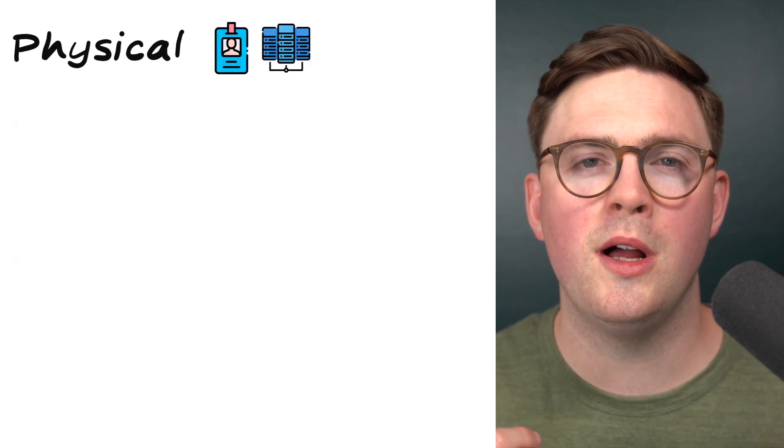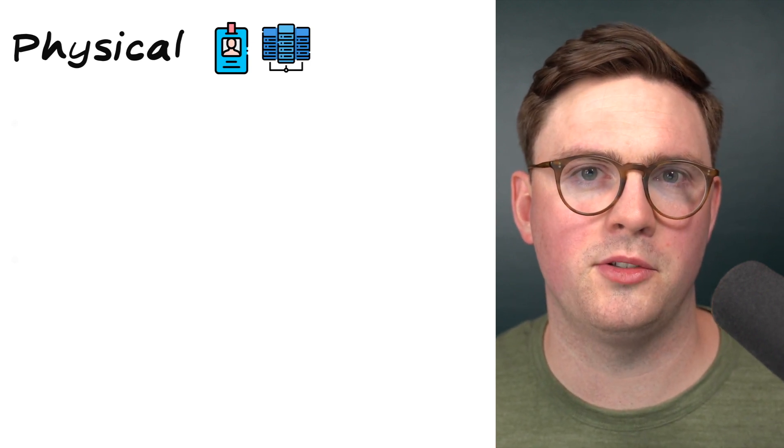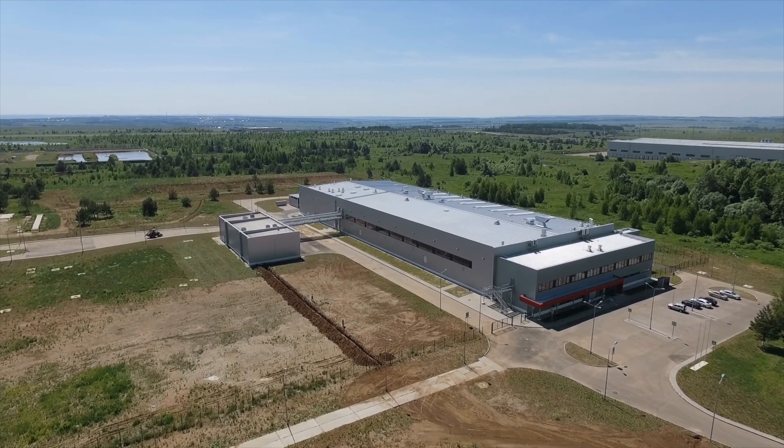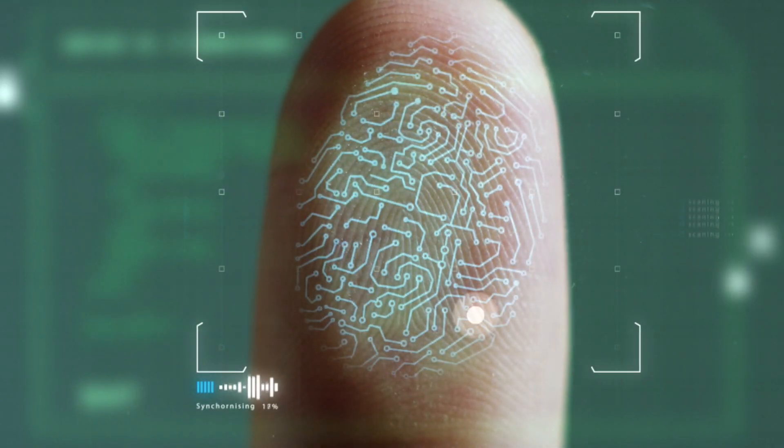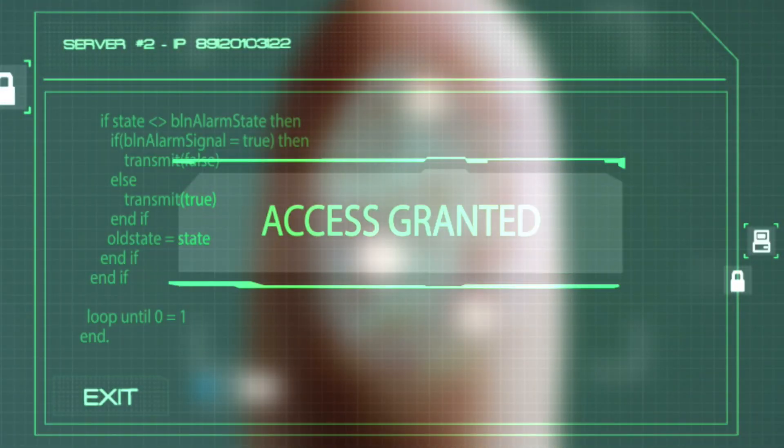The first security layer on our list is physical security. The goal here is to put physical security safeguards in place for people to be able to access our assets. This could be for your physical building that hosts your data center — using key cards or biometrics to stop unauthorized access.